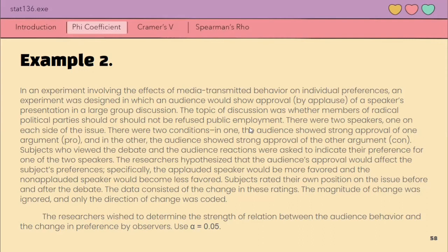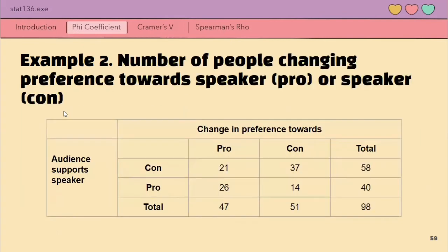So dito sa problema na ito, they already collected yung prior preference nila ng mga subjects. Then after the experiment, they rated kung ano na yung current preference nila. So, ito na yung data natin. Again, it's a 2 by 2 contingency table. So, phi coefficient is appropriate for this.